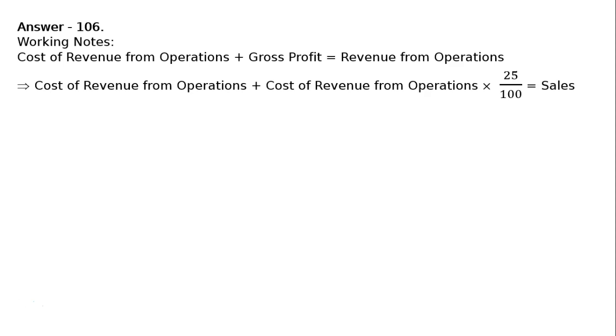Gross profit on cost is 25%. Working notes first. Cost of revenue from operations plus gross profit is equal to revenue from operations. Now, cost of revenue from operations plus gross profit on cost is 25%. Hence, cost of revenue from operations multiplied by 25% is equal to gross profit, which equals sales or revenue from operations.